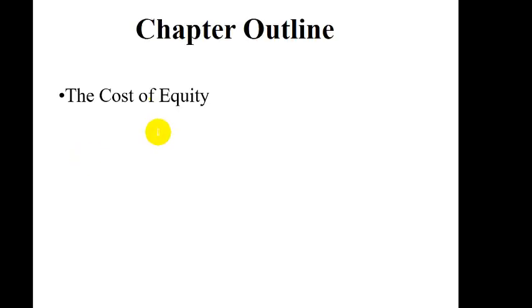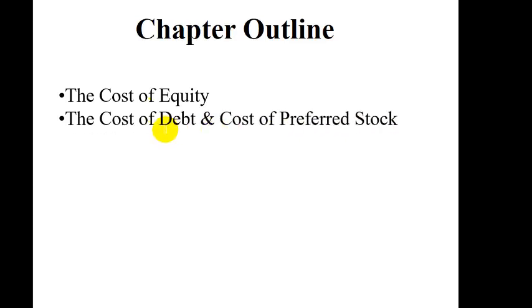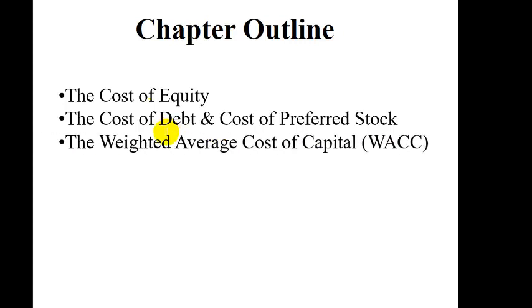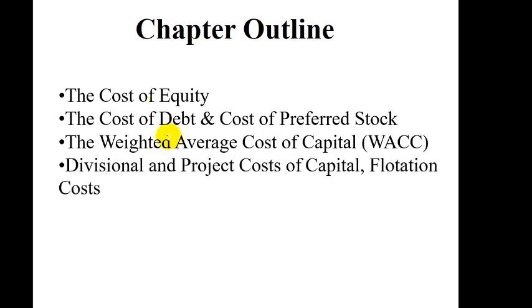In this chapter, we will discuss how to find out the cost of capital. First, we will discuss how to find out the cost of capital by different sources: cost of equity, cost of debt, cost of preferred stock. Then we will put them all together to figure out the weighted average cost of capital, WACC. We will also address how to find out the discount rate for divisional and special projects. Lastly, we will discuss flotation costs.